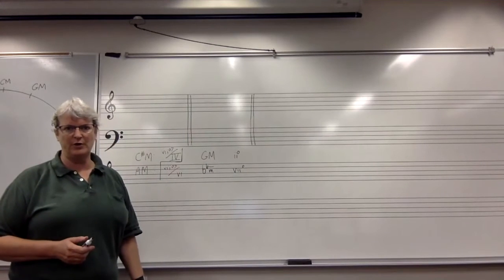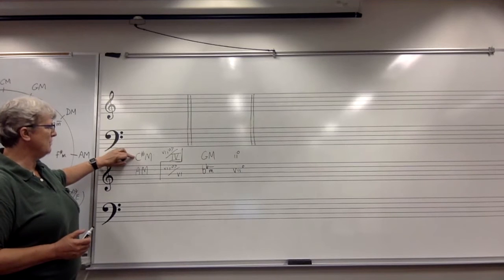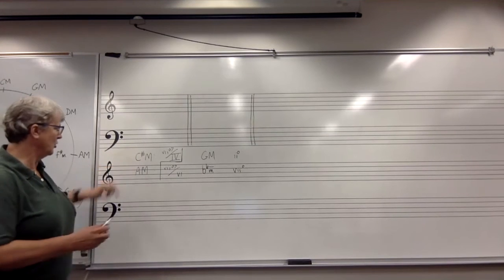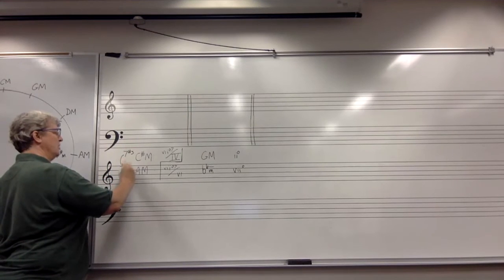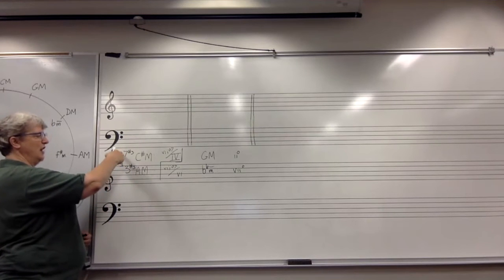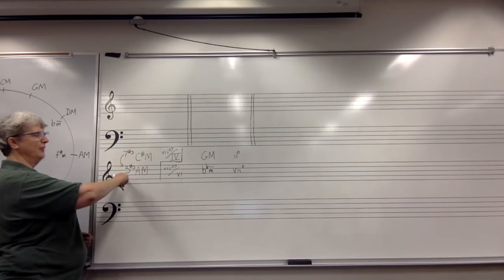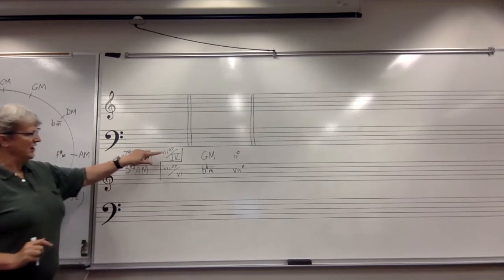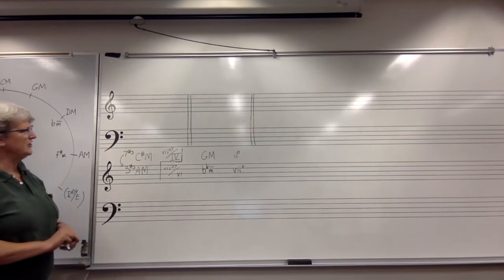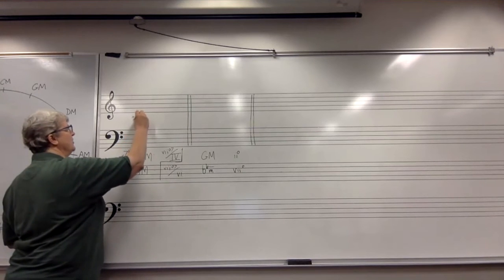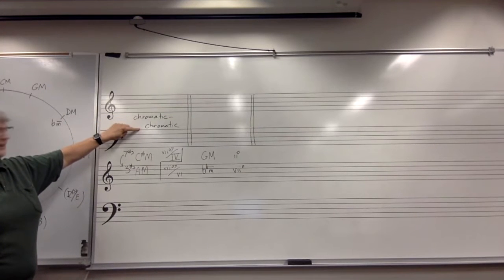Now let's consider two other modulations. Here I have a modulation from C sharp major to A major — from a key with seven sharps to a key with three sharps. In other words, we're going from the very sharp side to the less sharp side, moving in the direction of fewer sharps and more flats. In this case, I have a secondary leading tone chord in each key, so this is what we would call a chromatic-chromatic pivot chord — it's chromatic in the first key and chromatic in the second key.